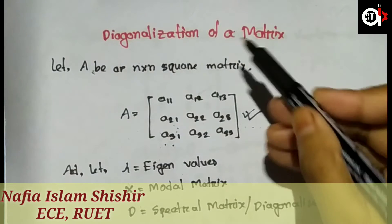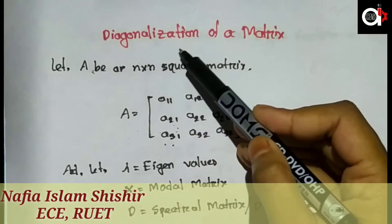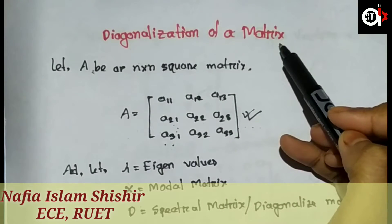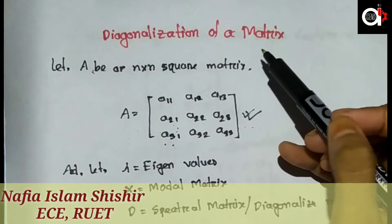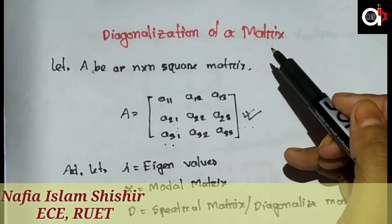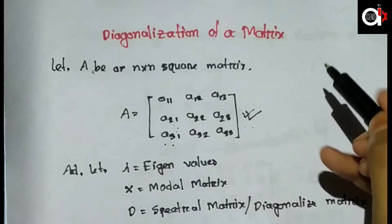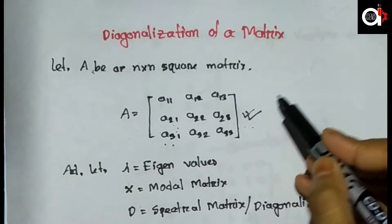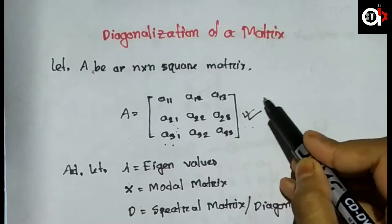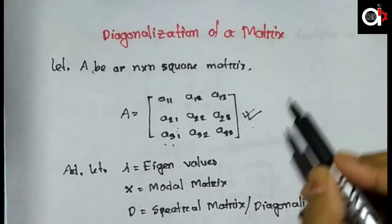Assalamualaikum. Today the topic is Diagonalization of a Matrix. How can we diagonalize a matrix? Diagonalize means: what is the diagonal form of a matrix?